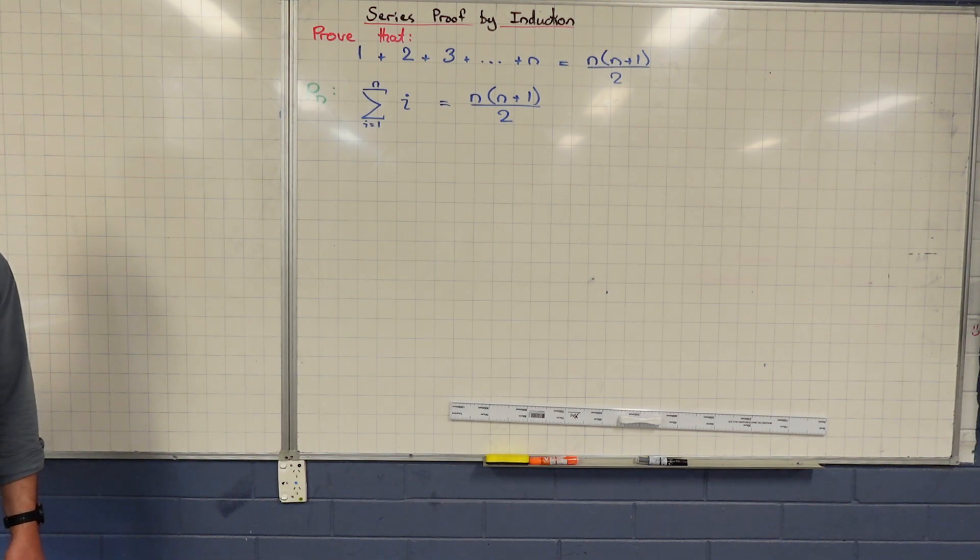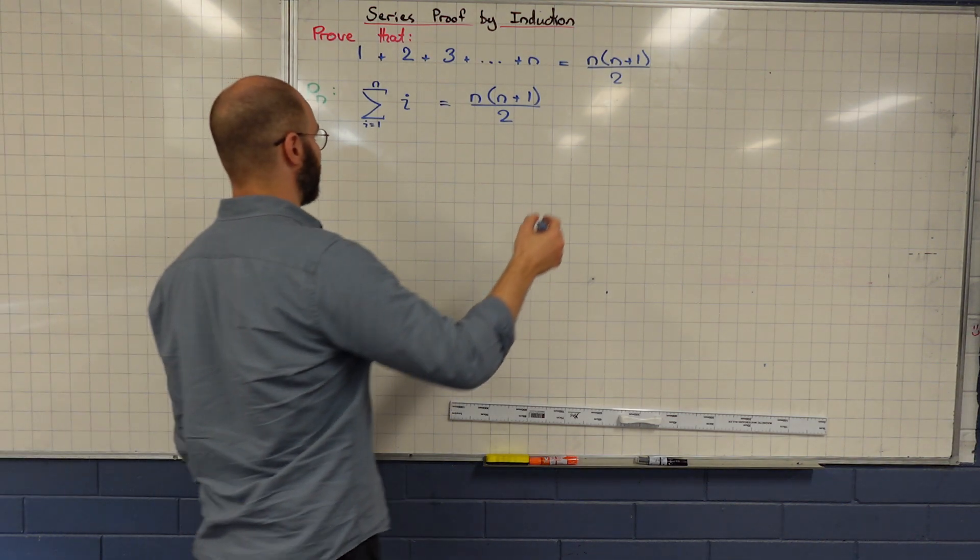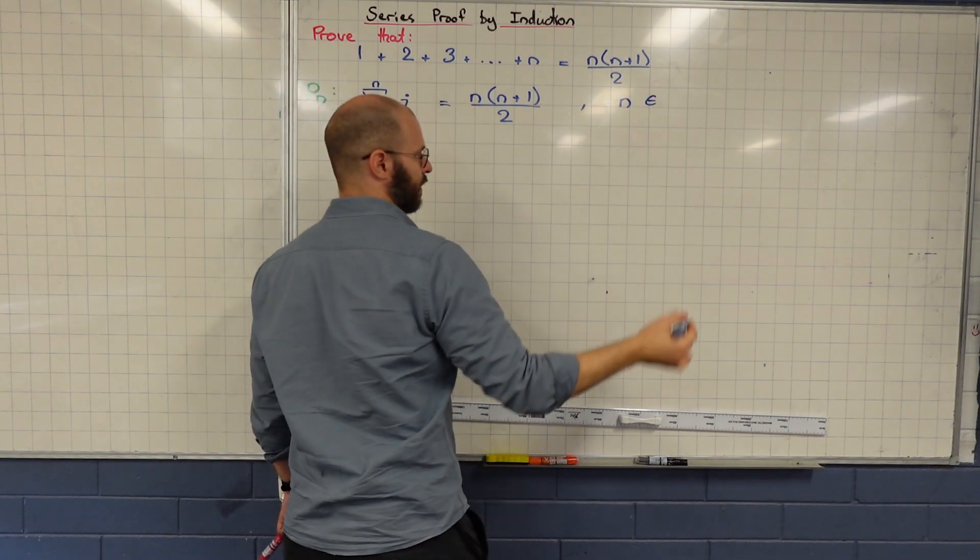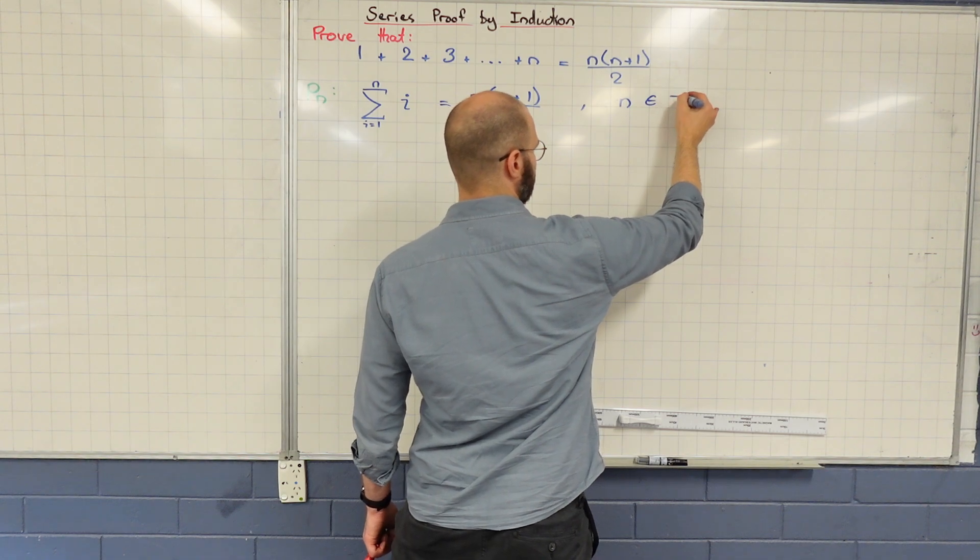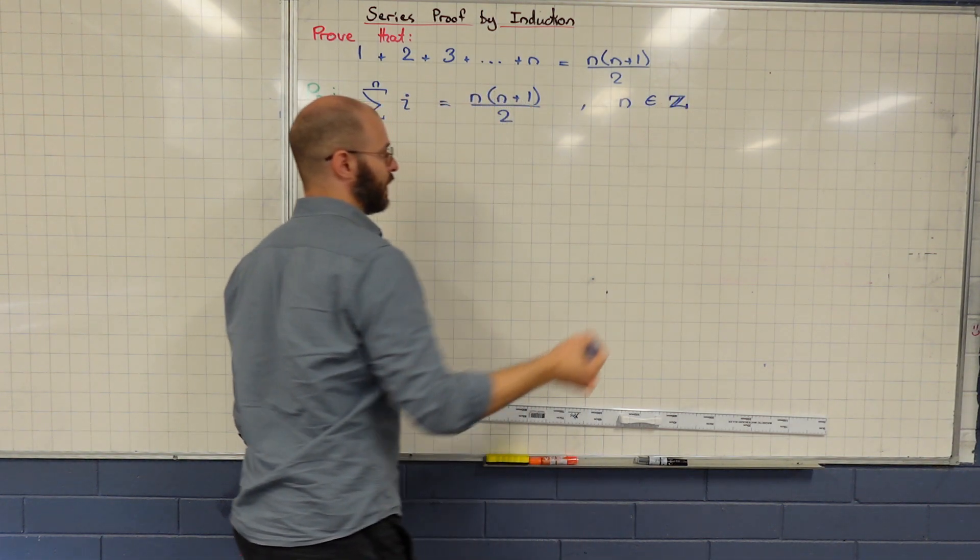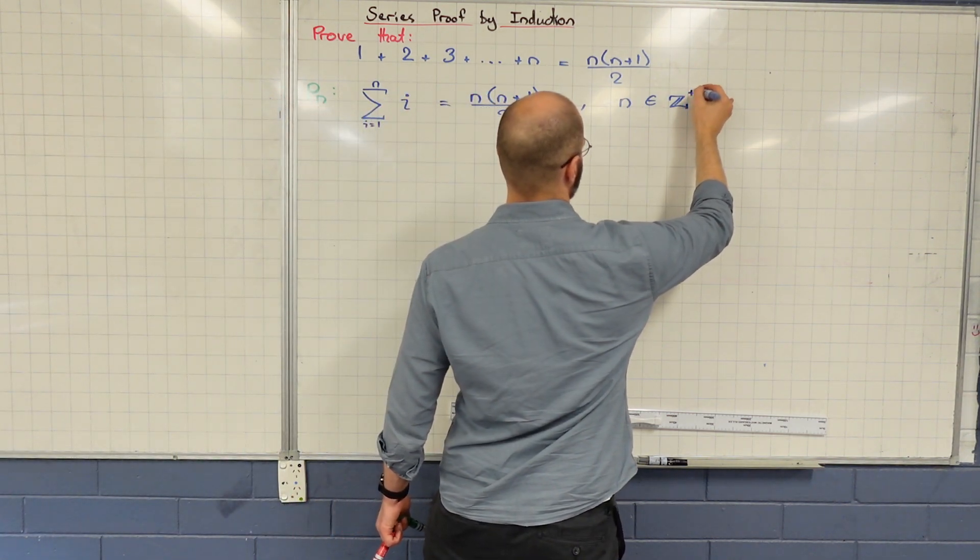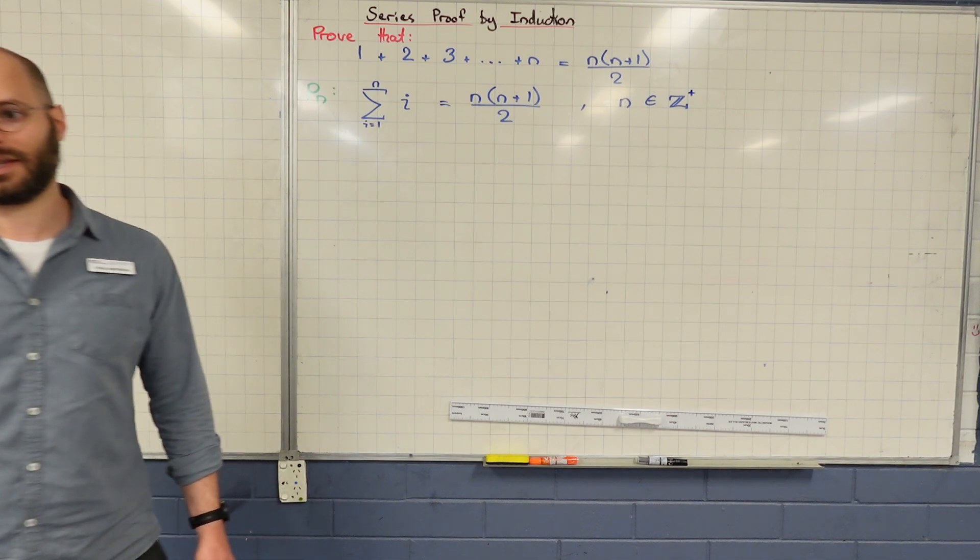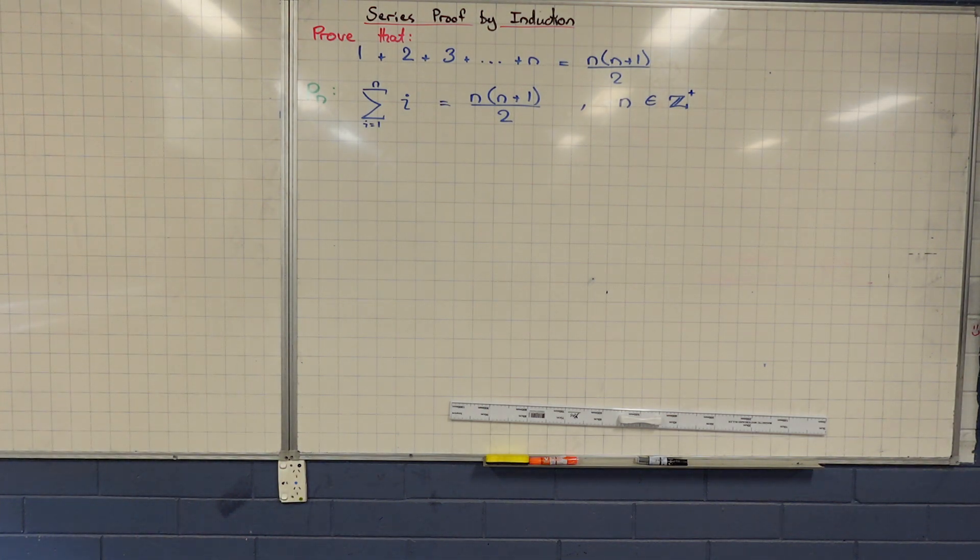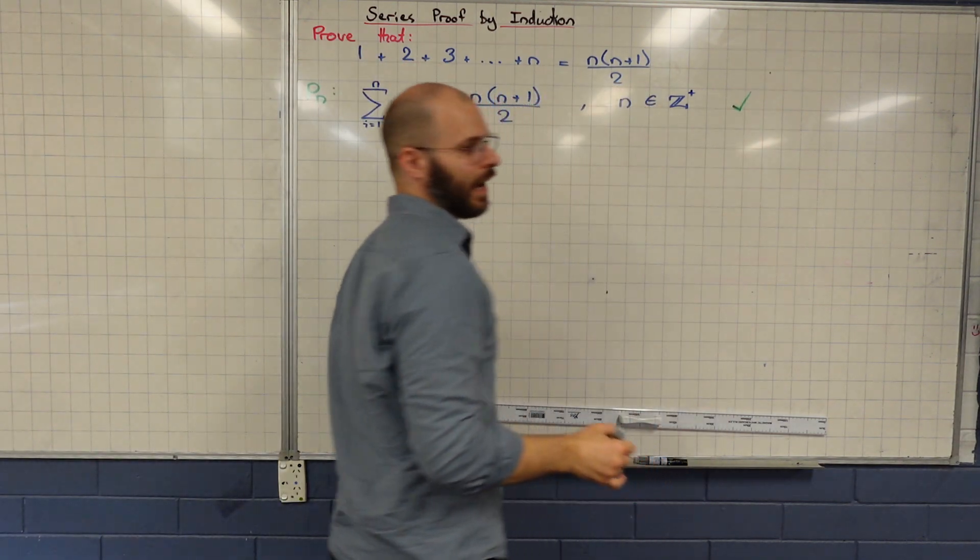Now we're halfway there. What do we need to define? i and what is n? n is any integer. Do we include zero? No, because that's not where it starts. Any positive integer, so we start at number one. Okay. This is the first step, we define P of n.